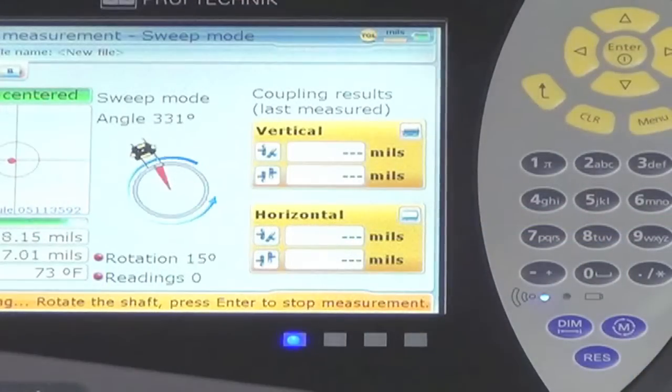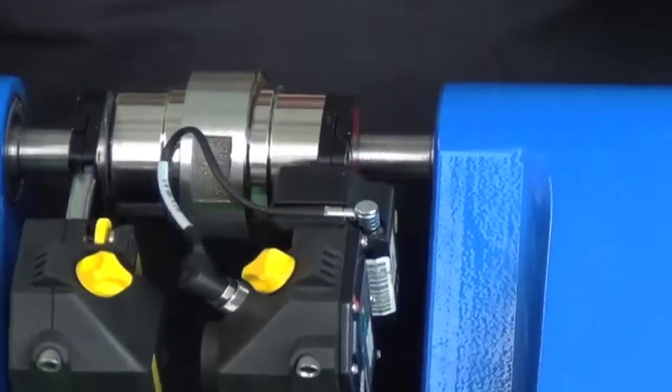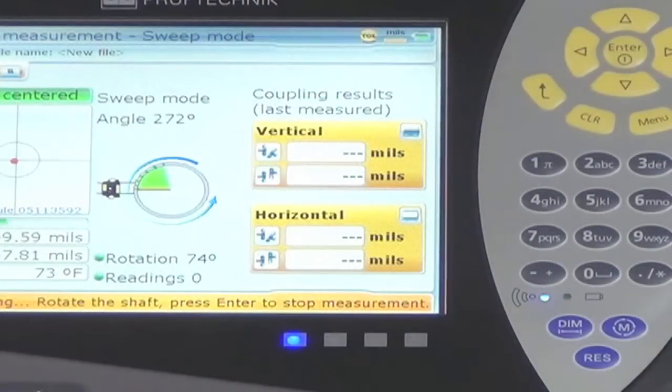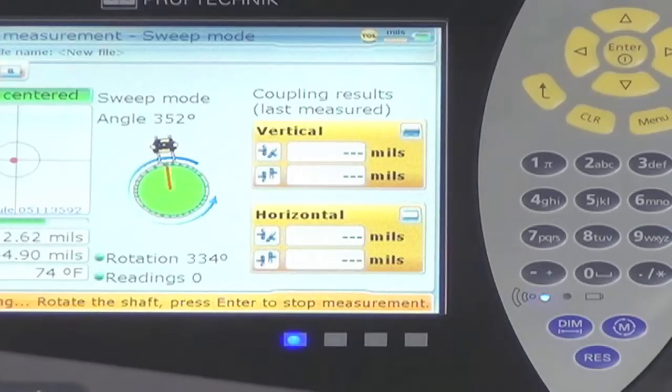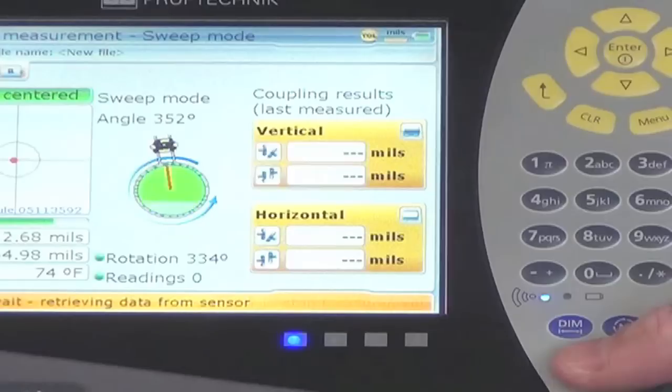It automatically starts taking readings when we rotate. We go all the way around 360 degrees, and then we press the results button.